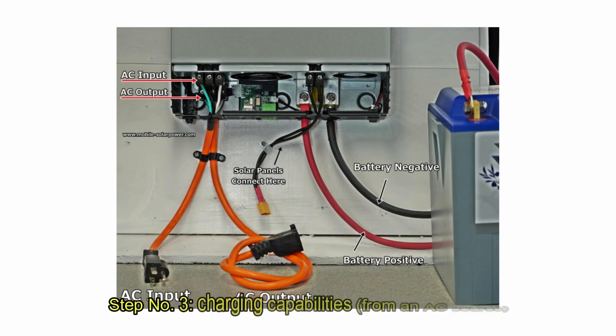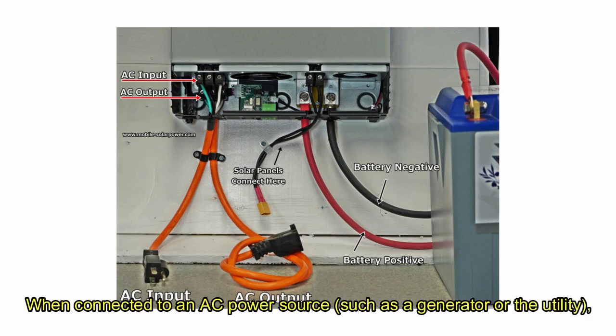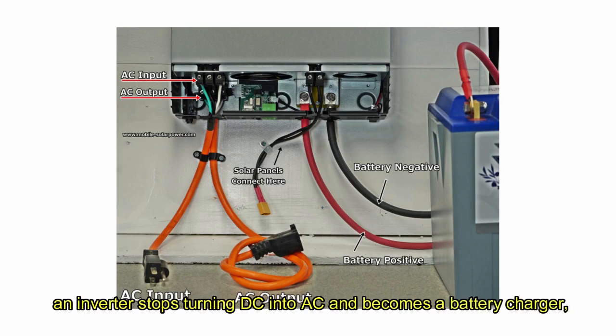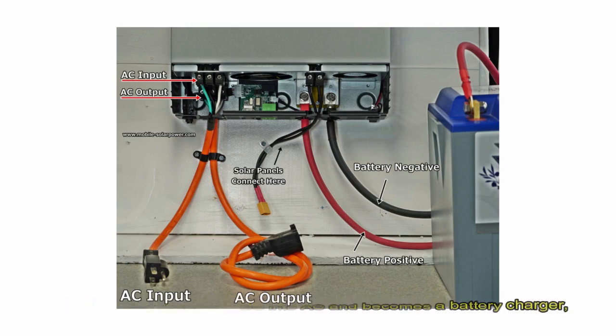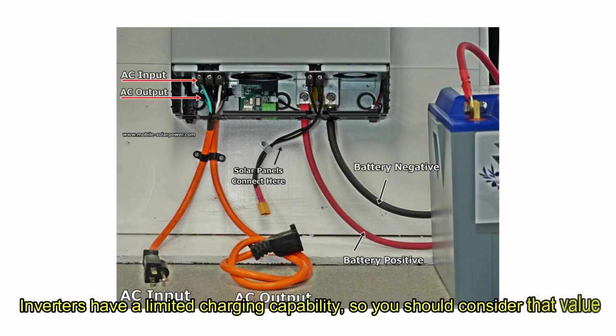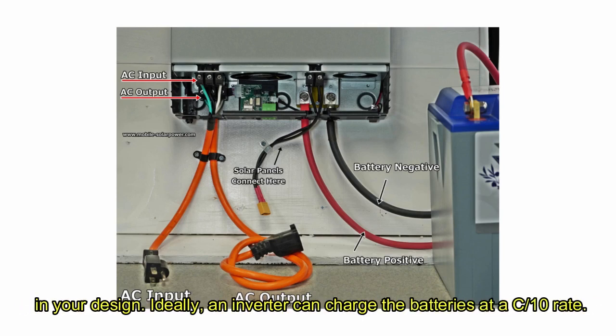Step number three, charging capabilities from an AC source. When connected to an AC power source, such as the generator of the utility, the inverter stops turning DC into AC and becomes a battery charger, taking the AC source and recharging the batteries for you. Inverters have a limited charging capability, so you should consider that value in your design. Ideally, an inverter can charge the batteries at a C over 10 rate.